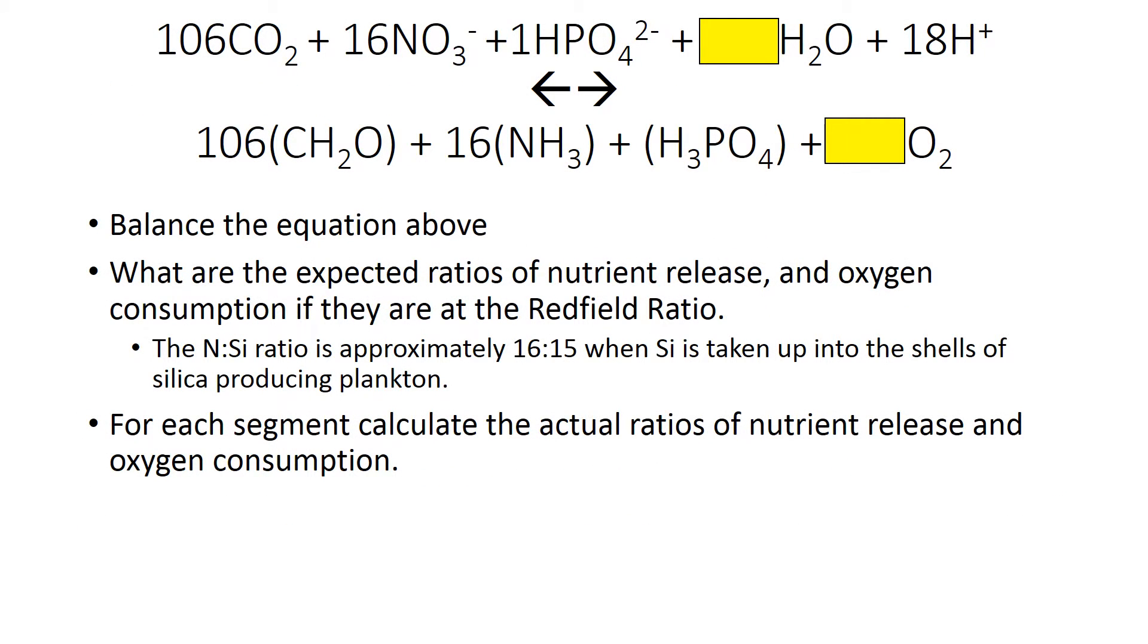Once you've done that, we need to compare those ratios of amount change to what we expect. First, you have to balance this equation to work out how much oxygen you use up when you respire 106 carbons, or release 16 nitrogens, or release one phosphorus. Your ratios of N to P, the Redfield ratio, should be 16 to 1. Your ratios of oxygen to nitrogen will be whatever this number is divided by 16. Your ratio of oxygen to phosphorus will be whatever this number is divided by 1.